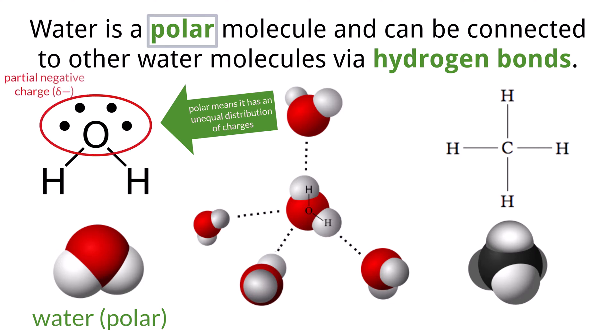This means that there is an unequal distribution of charges throughout the molecule, causing one side of the water molecule to be partially negative and the other side to be partially positive. The electrons shared between the bonds of the hydrogen and oxygen are pulled closer to the oxygen because it is more electronegative.